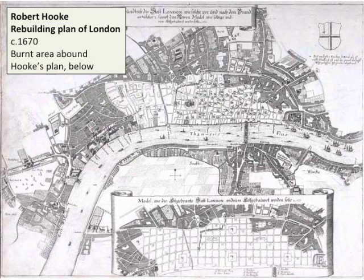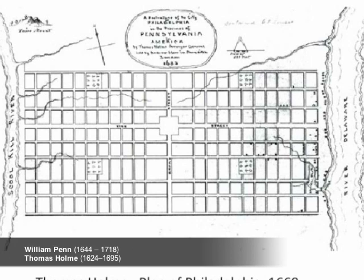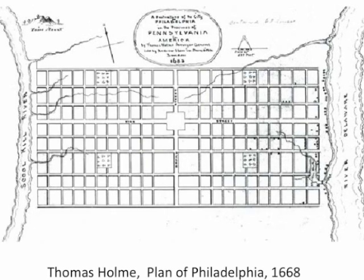But all these ideas were in the air. When Philadelphia gets founded in 1668, just two years after the Great Fire of London, William Penn gets a surveyor called Thomas Holm. Both were bred and educated in England, and so very much aware of these planning ideas circulating at the time.